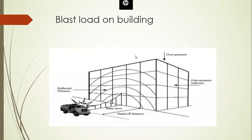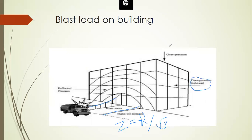A 3D representation of a blast wave is shown, illustrating the standoff distance Z, given by the formula Z = R / W^(1/3). Three types of pressure are identified: side-on over pressure, over pressure from the top, and reflected pressure.